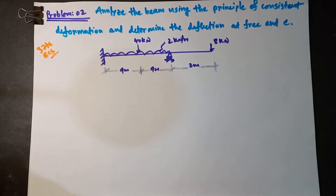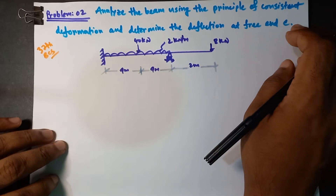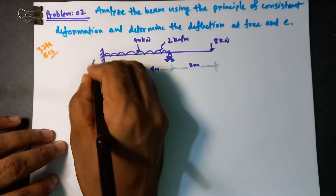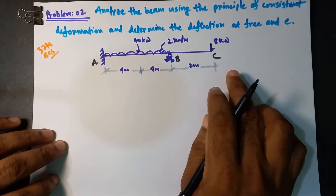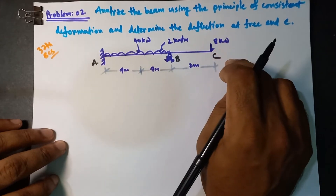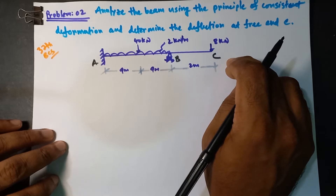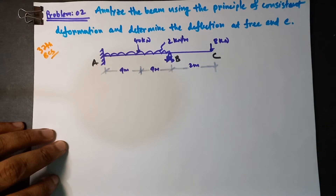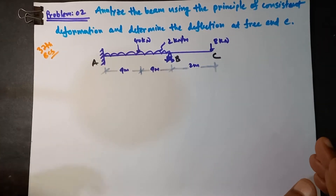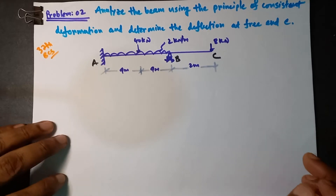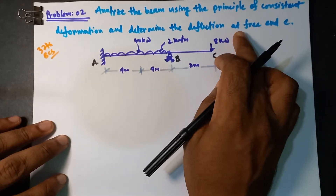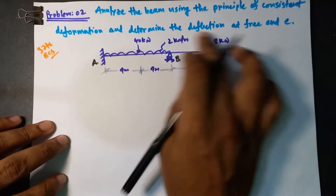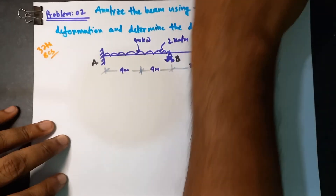By unit load method, I am going to use the unit load. And it is the deflection at free end C. This is a free end C. So this is a deflection — we are going to find the deflection. We are going to analyze the indeterminate beam. We are going to analyze the beam using the deflection method.